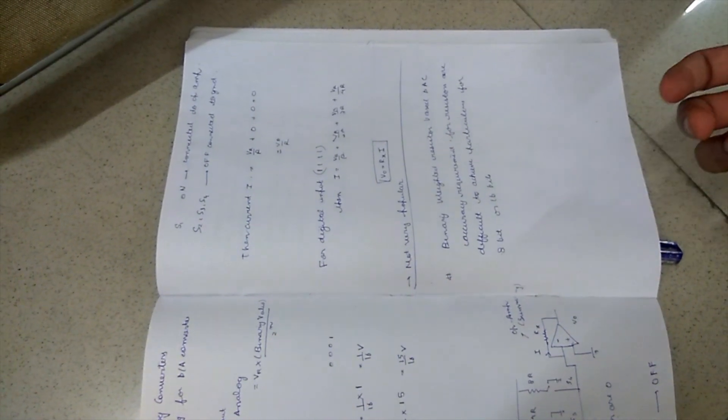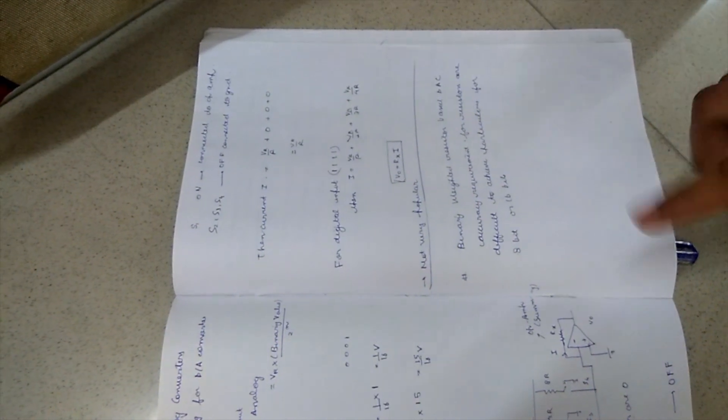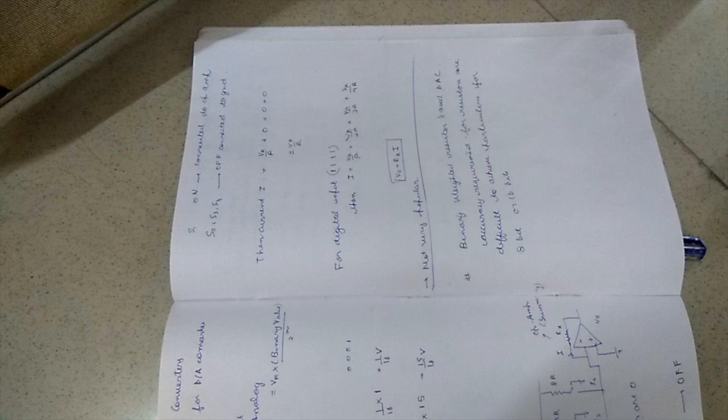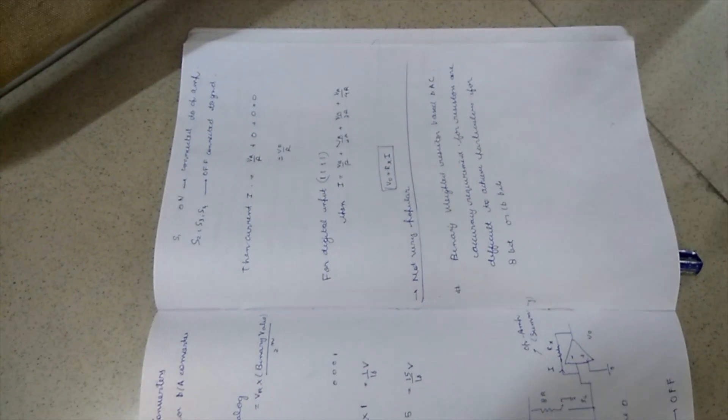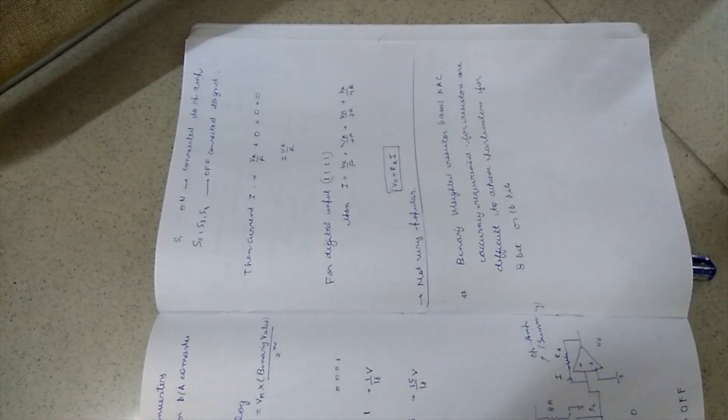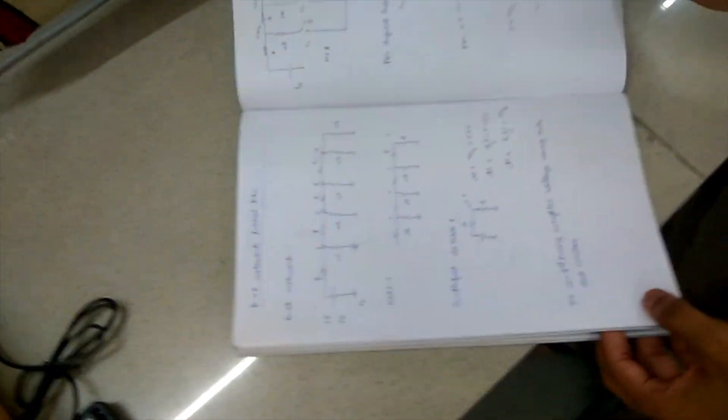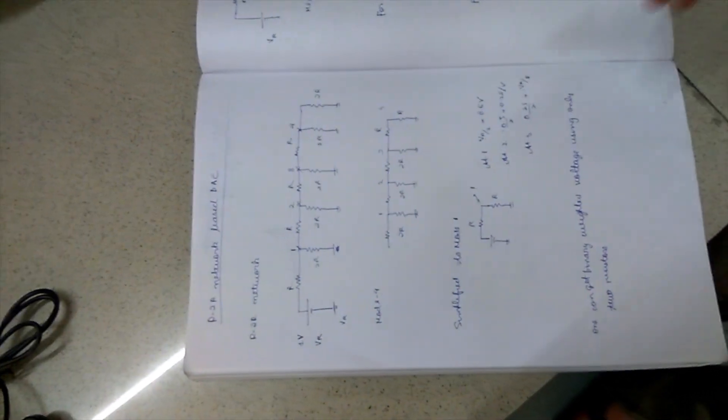Hence, we need a precision of 1 divided by 2 raised to power 4, that is 1 divided by 16, which is almost not possible or very difficult to attain such precision. Hence, this method is generally not used. In most digital-to-analog converters, we use the R2R network based technique.